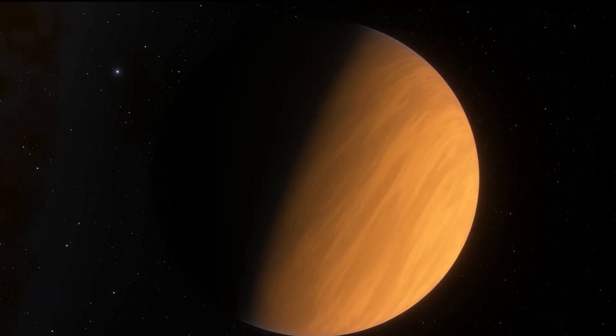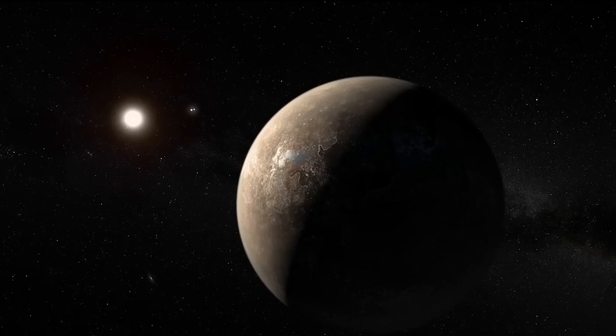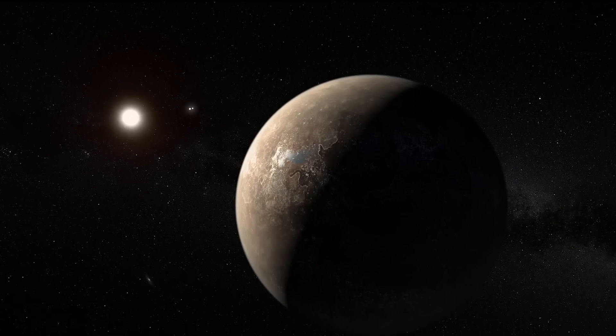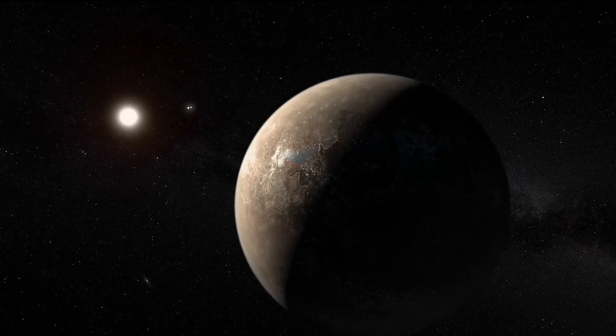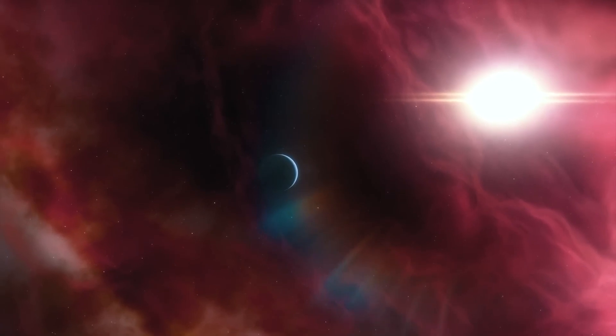Astronomers also believe that Proxima b may not always have been habitable. If it had formed in the current orbit, it would have been hotter before Proxima Centauri became a main sequence star.